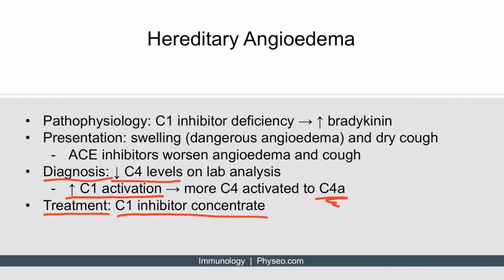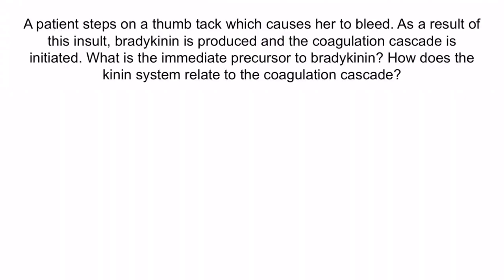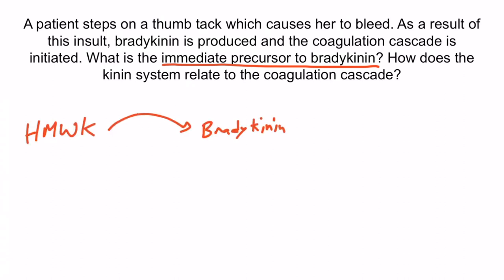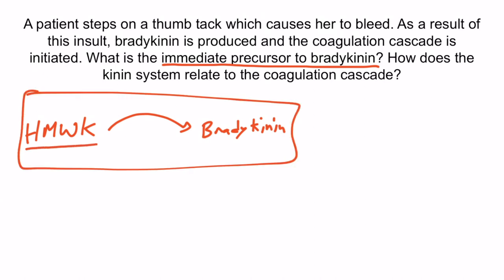Now that we've discussed the kinin system, let's do a question to apply what you've learned. A patient steps on a thumbtack, which causes her to bleed. As a result, bradykinin is produced and the coagulation cascade is initiated. What is the immediate precursor to bradykinin? Recall that high molecular weight kininogen, HMWK, gets converted to bradykinin — so high molecular weight kininogen is the immediate precursor.